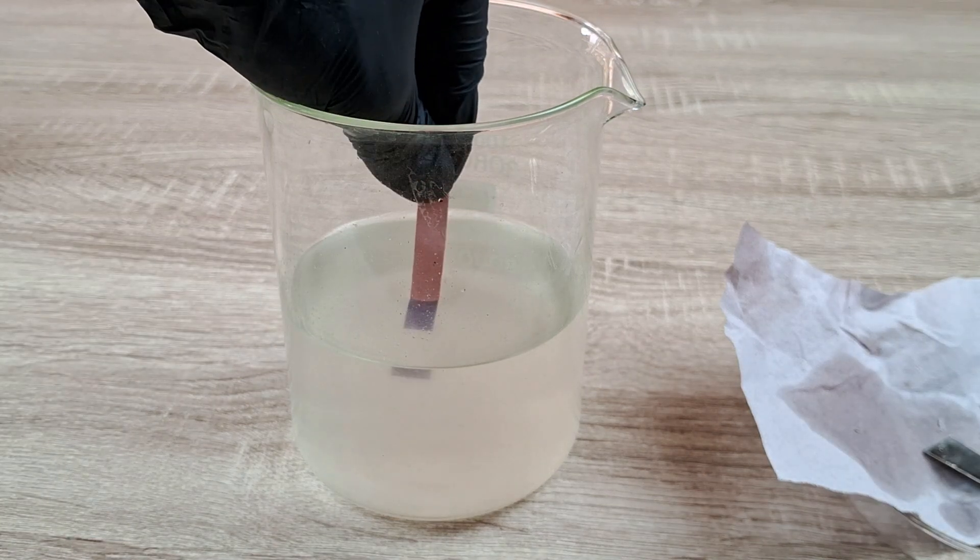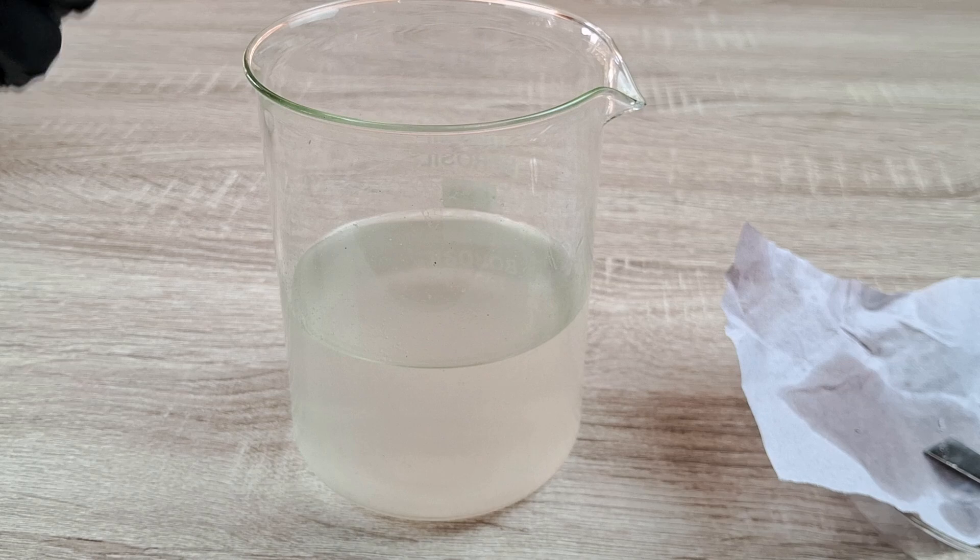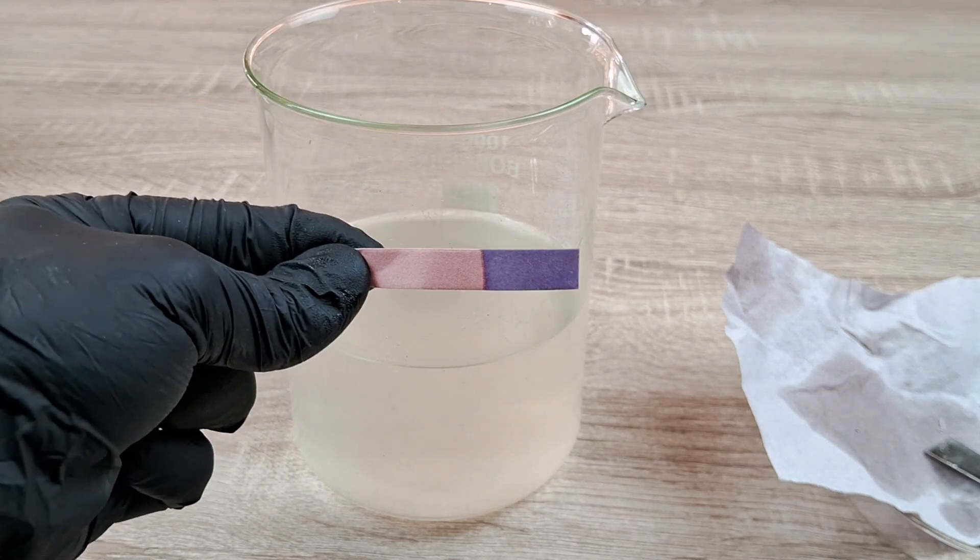At the end of the reaction, if you dip a strip of red litmus paper into the water in the beaker, the red litmus is seen to turn blue.